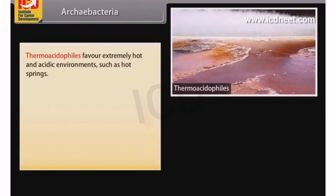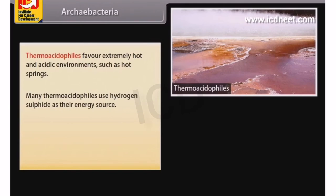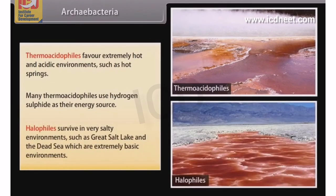Thermoacidophiles favor extremely hot and acidic environments such as hot springs, and many use hydrogen sulfide as their energy source. Halophiles survive in very salty environments such as the Great Salt Lake and the Dead Sea, which are extremely basic environments.